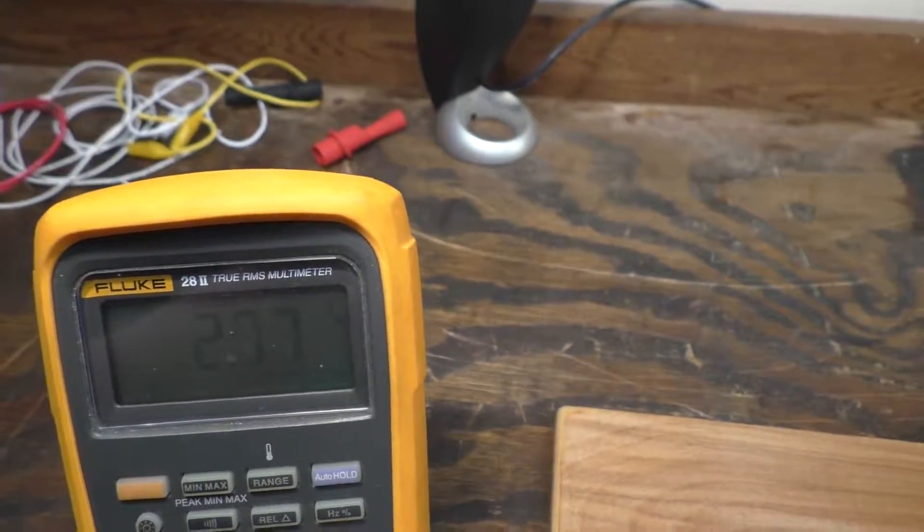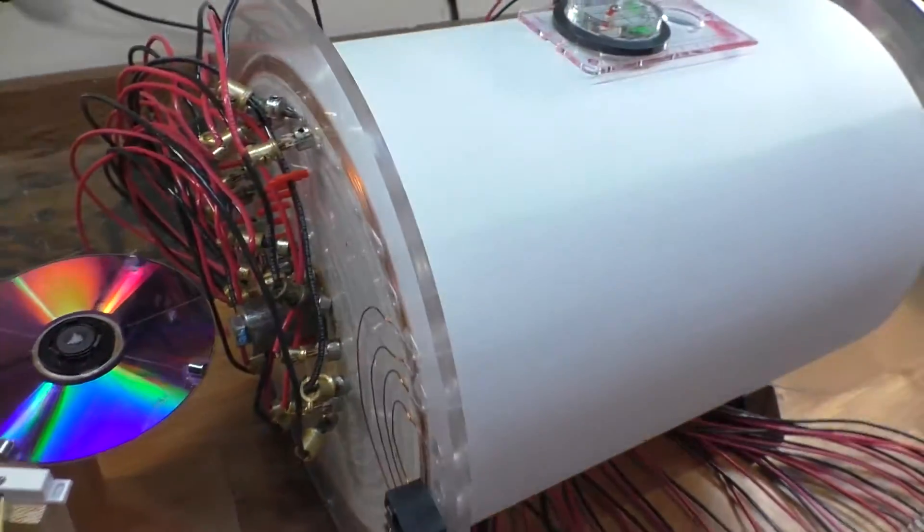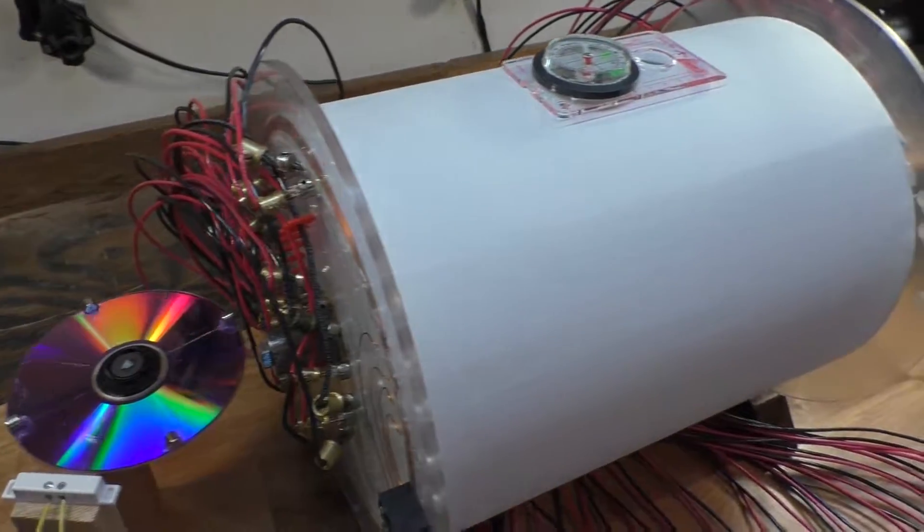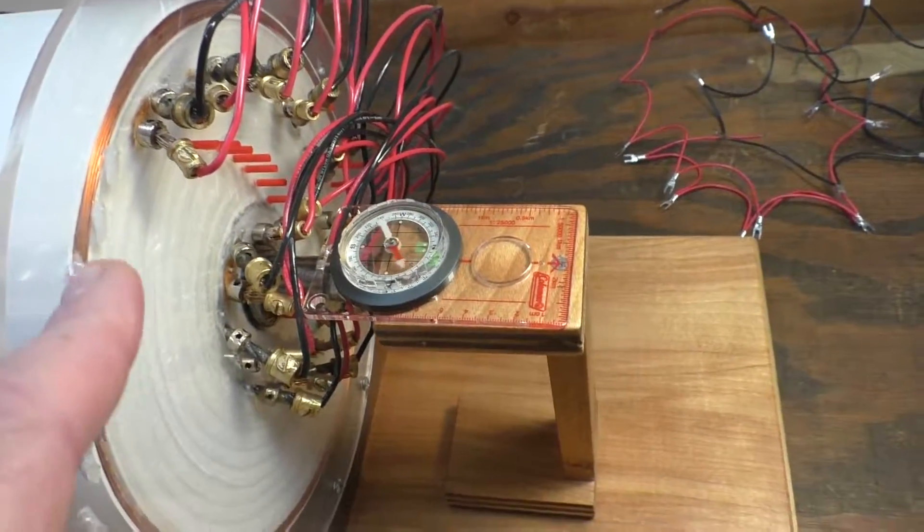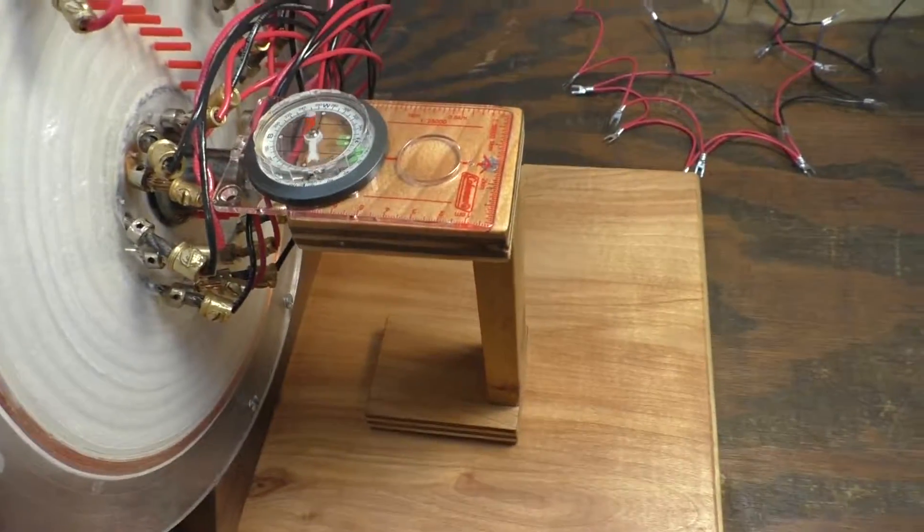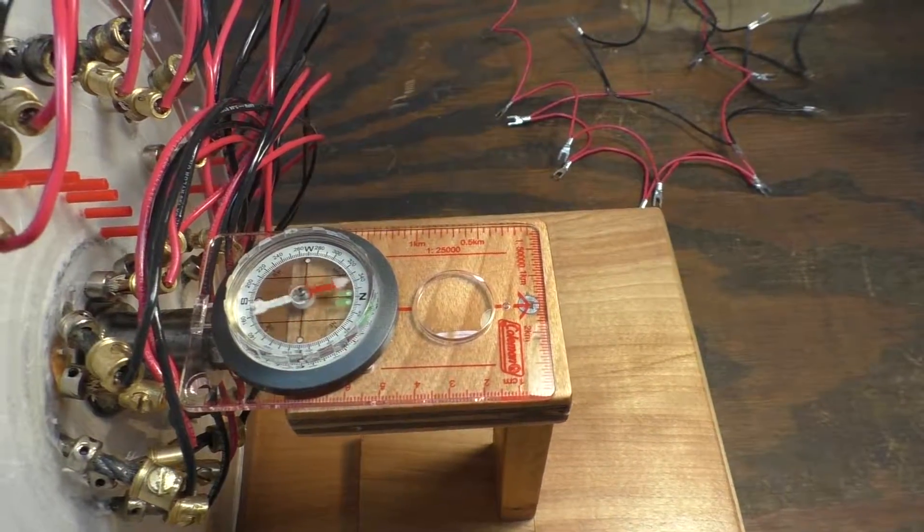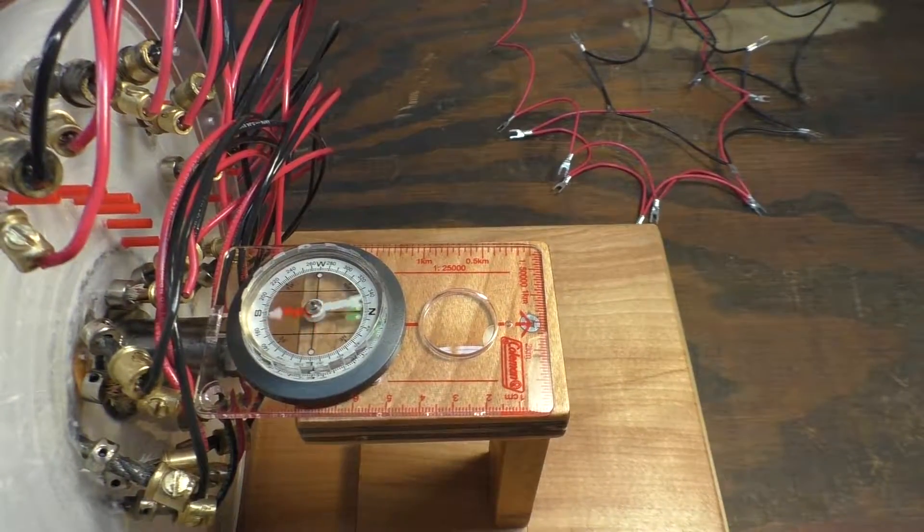And it just keeps on getting faster and faster. When I built this, the iron core actually became magnetized with this end over here being north and this end being south. But the more this thing runs, the faster that compass seems to spin.